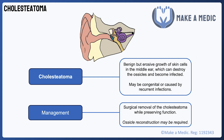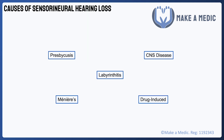Reconstruction of the middle ear may then be attempted, but it's not always successful. The causes of sensorineural hearing loss include a range of pathologies affecting the inner ear as well as the brain. Presbycusis is the technical term for age-related degeneration of hair cells, the sensory receptors of the auditory system that are found in the cochlea.